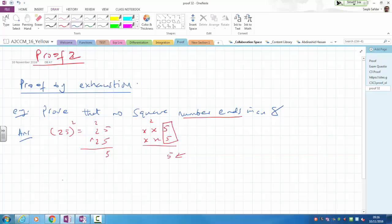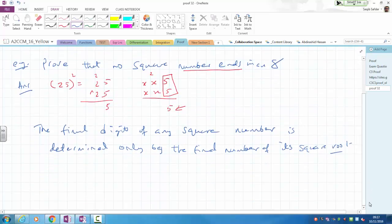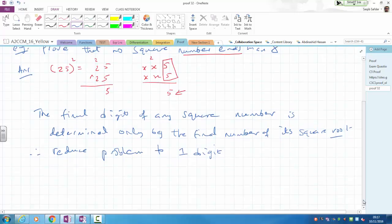What we could do is basically say the final digit of any square number is determined only by the final number of its square. So therefore, what we could do is just reduce the whole problem to one digit.